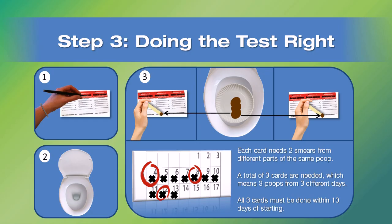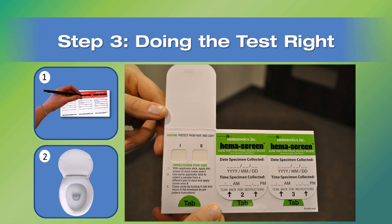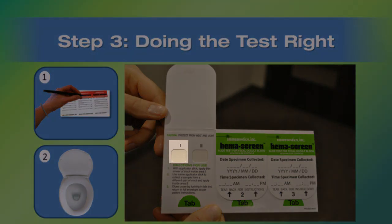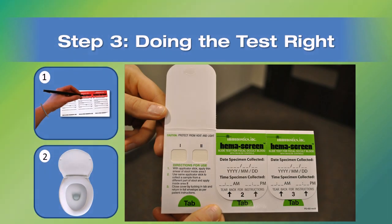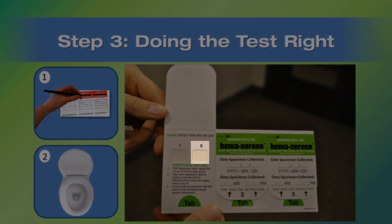You only need a thin smear that fits within the test area. More is not any more accurate, it's just messier. The screen will absorb any blood if there is any. Smear this inside test flap area 1. Use the same scoop to scoop a second poop sample from the surface of a different part of your poop and smear it inside test flap area 2.